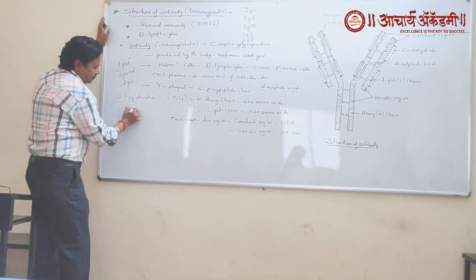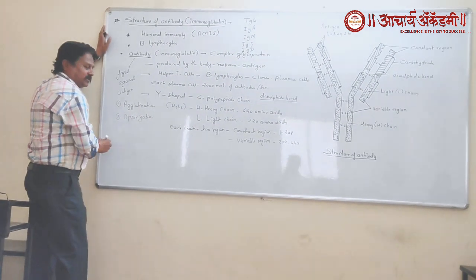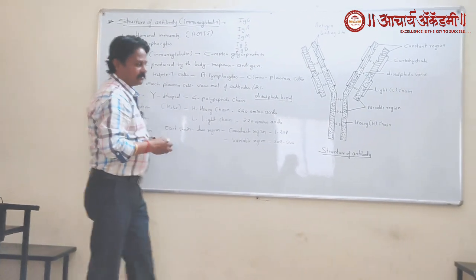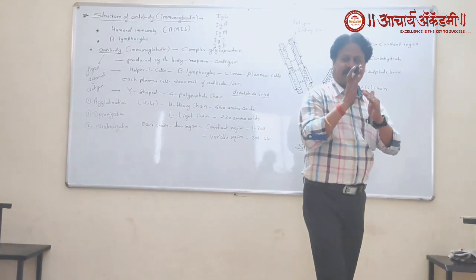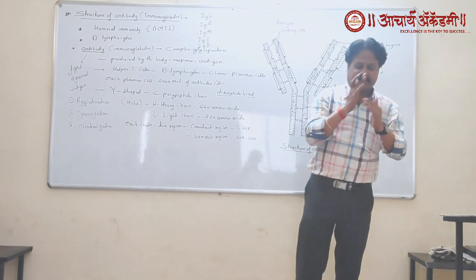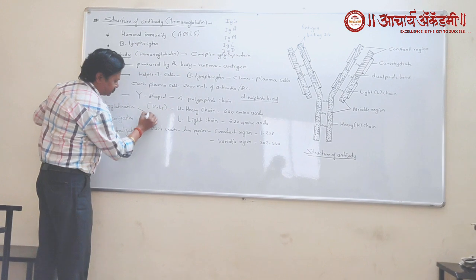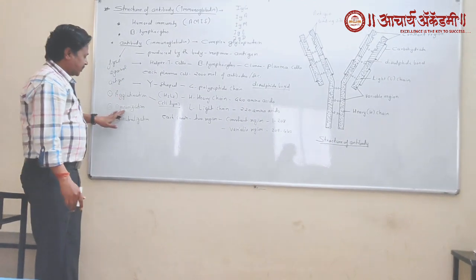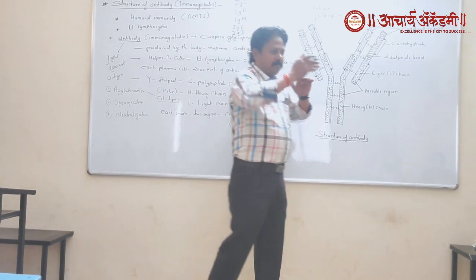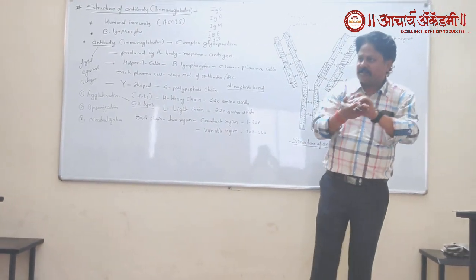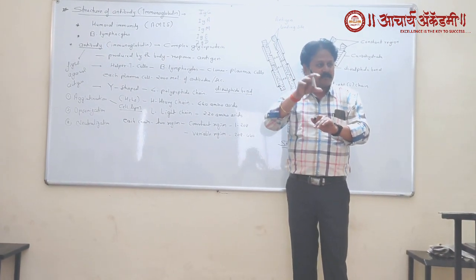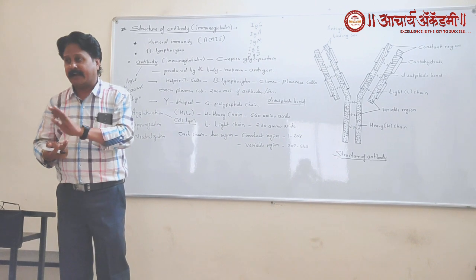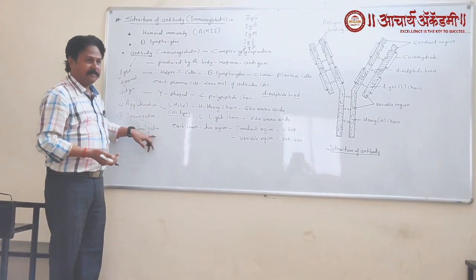These antibodies fight against the antigen mainly by three different methods. First, they bind to the surface of the antigen — this process is called neutralization. Second, opsonization — the antibody forms a coat on the antigen and attracts macrophages as well as monocytes to phagocytose the particular antigen. Third, the antibodies neutralize the effect of toxins produced by the antigen. This stable mechanism of killing the antigen is important in immunity.